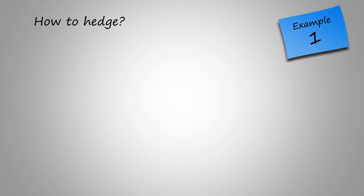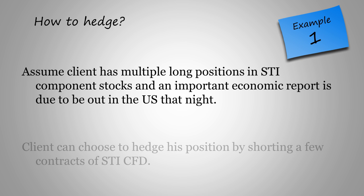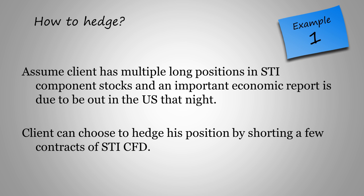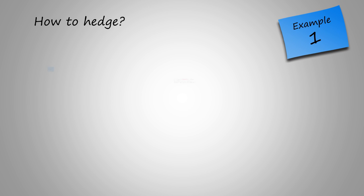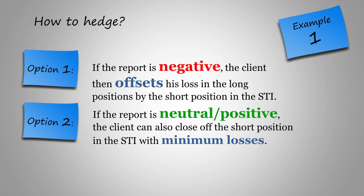How is hedging done? Let us go through a few simple examples to illustrate how it is done. Assume Klein has multiple long positions in STI component stocks and an important economic report is due to be out in the US that night. Klein can choose to hedge his position by shorting a few contracts of STI CFD. In this situation, he has two options. The first is if the report is negative, the client then offsets his loss in the long positions by the short position in the STI.